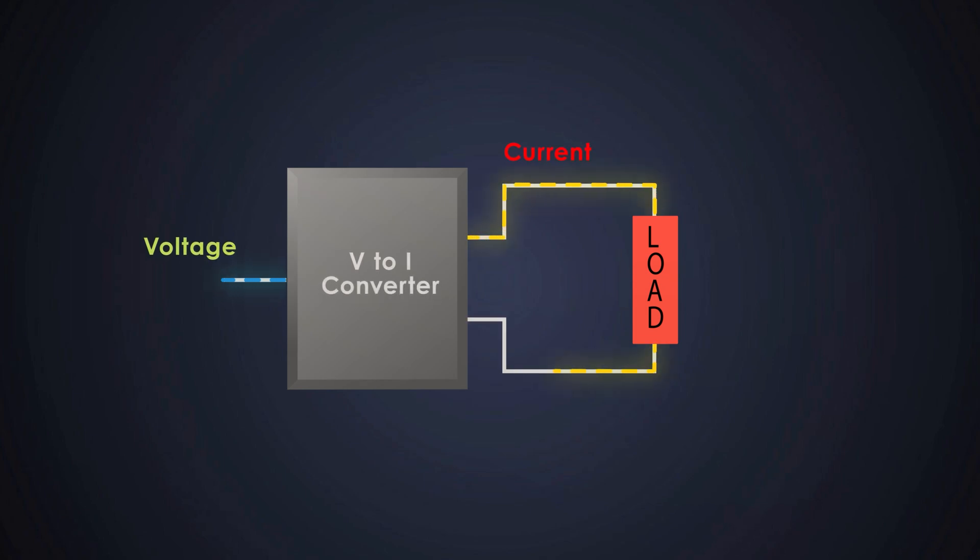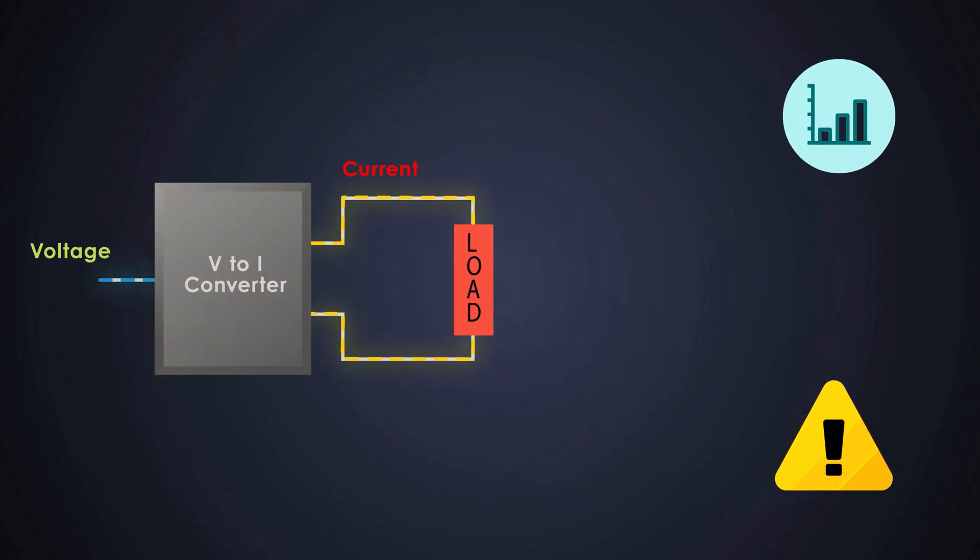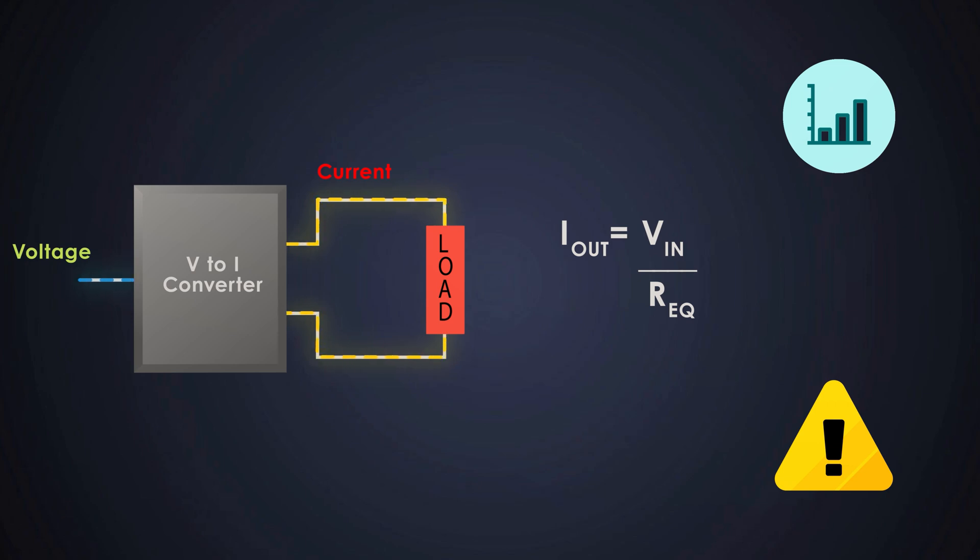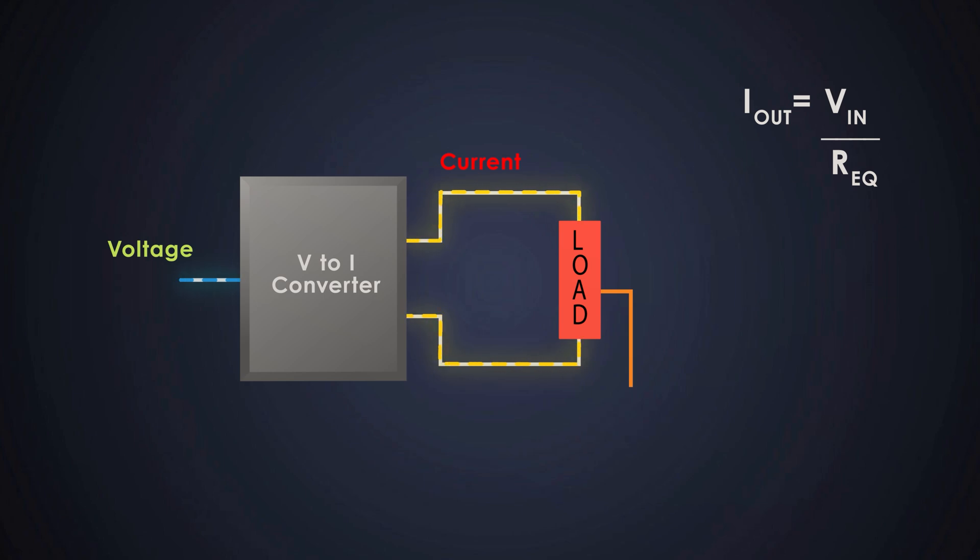A voltage to current converter simply converts a voltage input into a controlled accurate output current. It is an analog circuit that produces an output current directly proportional to its input voltage. The key design objective is to maintain constant current regulation irrespective of the load impedance variation, which is very important in systems where current control defines performance, resistance, and safety. At its core, the V2I converter follows Ohm's law, where Req is the equivalent resistance determined by the feedback network and sensing resistor configuration. The circuit dynamically adjusts its internal voltage drop, usually through an active element like a BJT or MOSFET, to maintain this current, compensating for changes in load resistance.